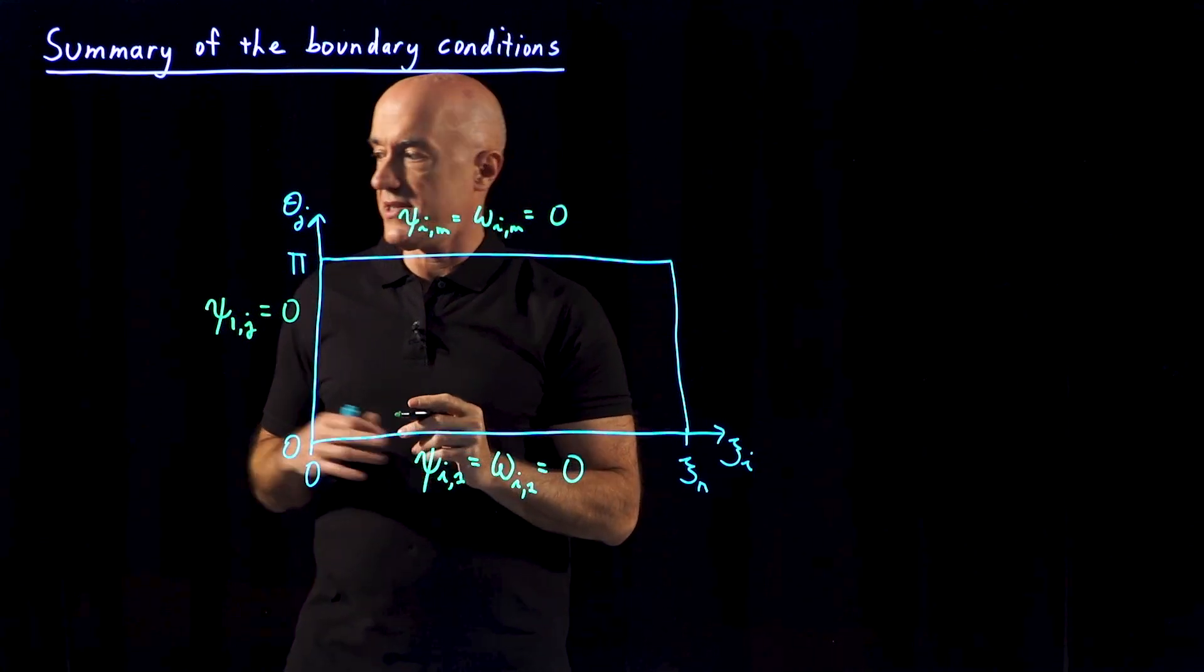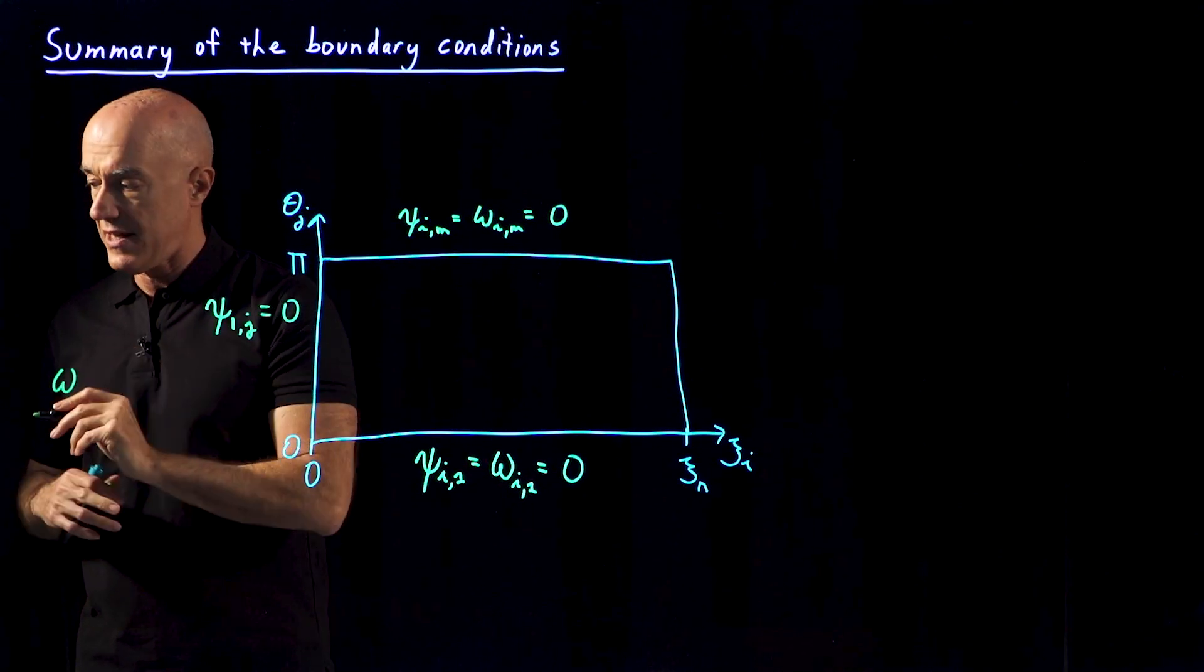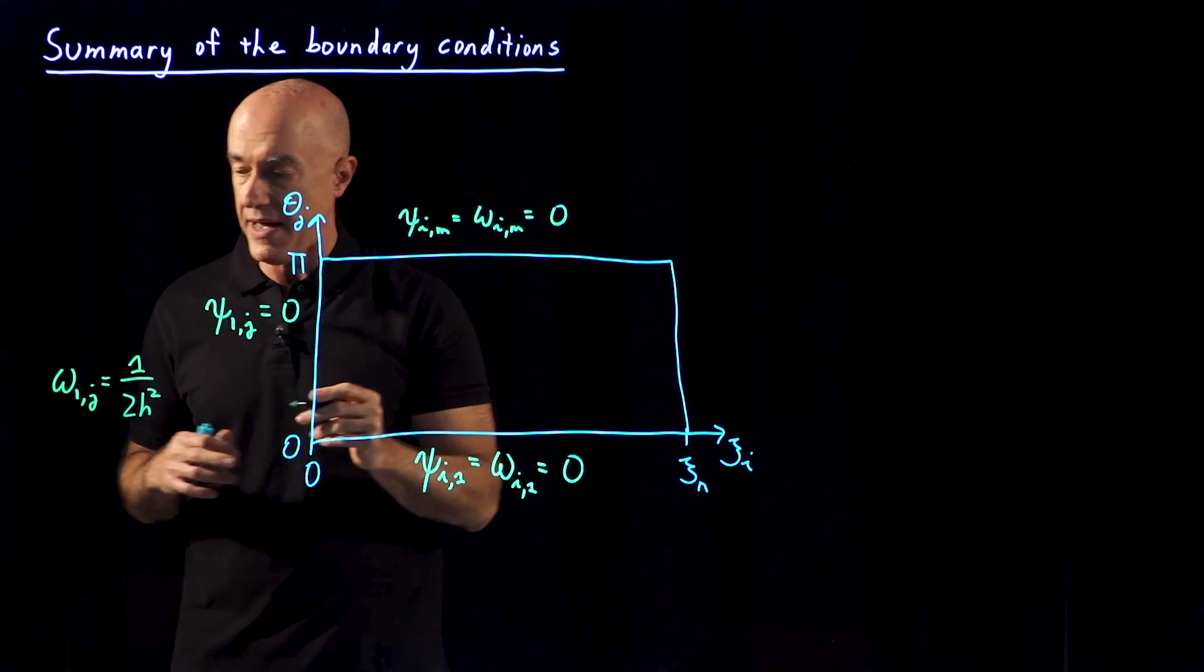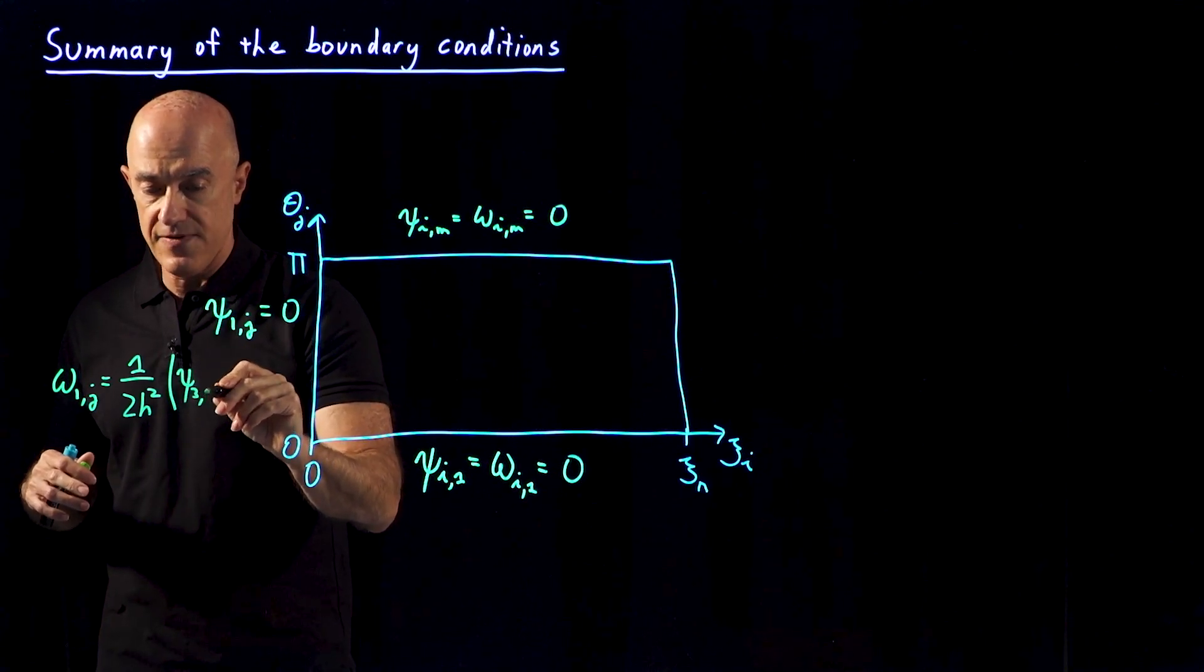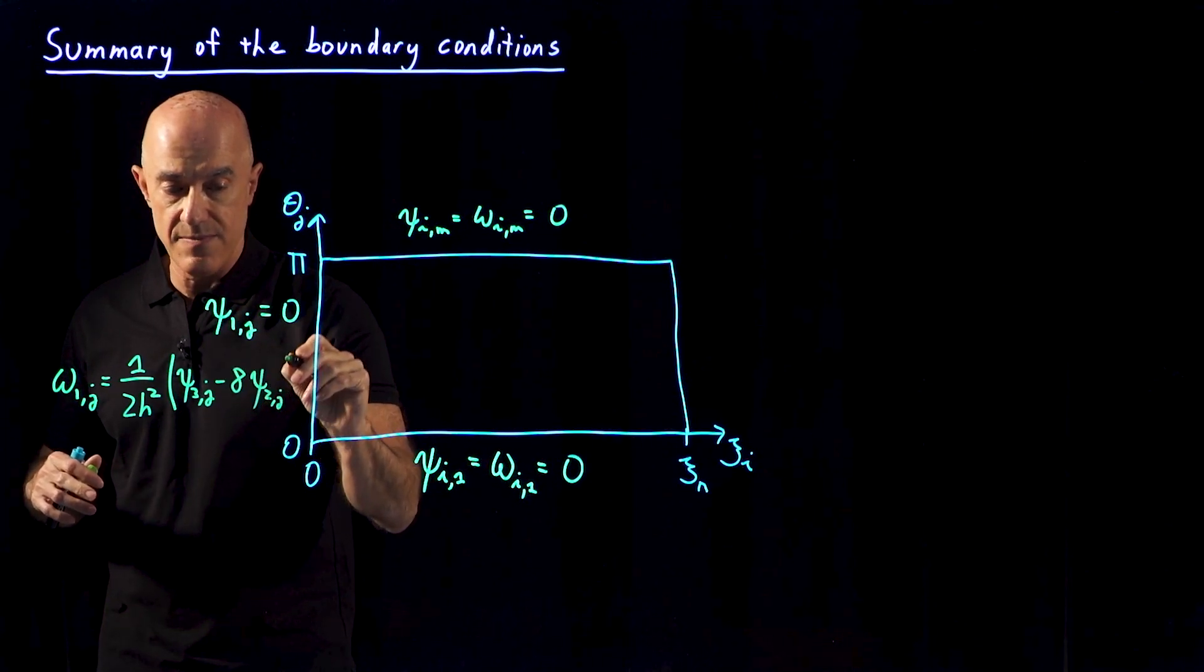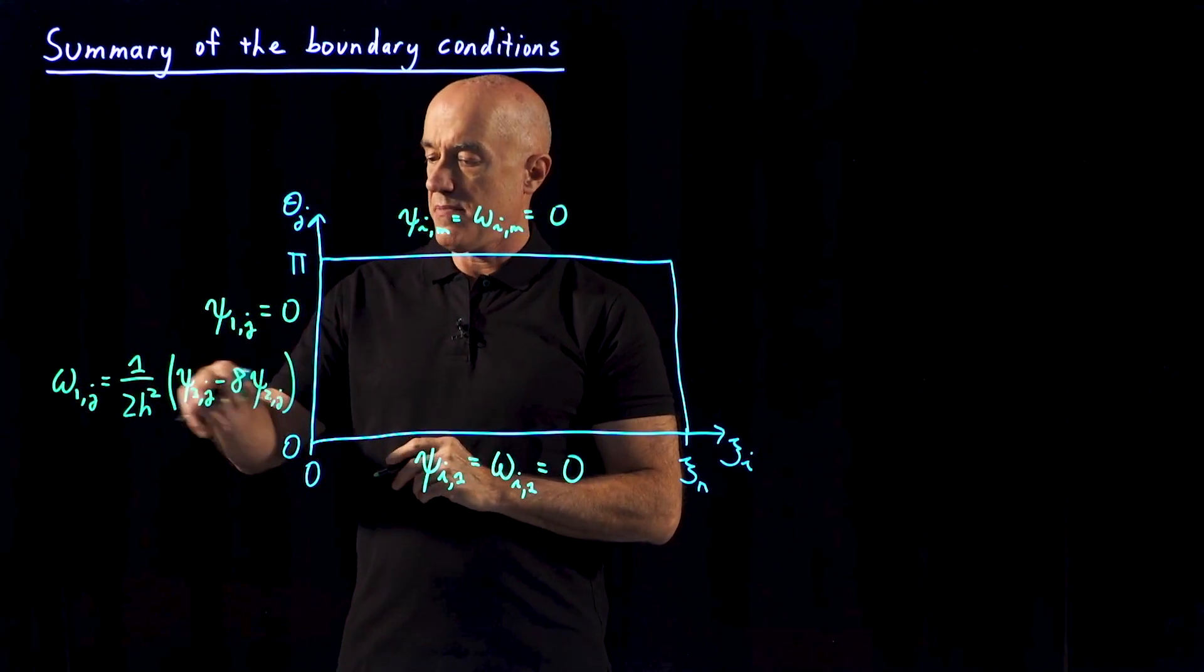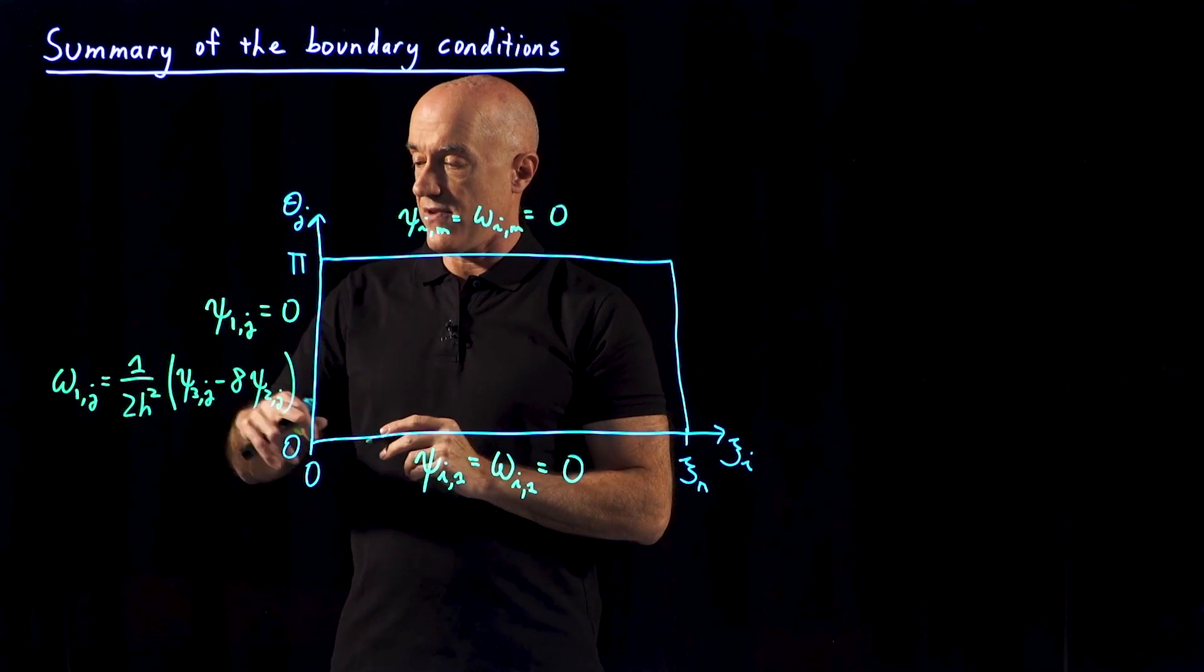What about the vorticity on the cylinder? That was this complicated boundary condition which we derived. We have the vorticity on the cylinder, omega 1,j equals 1 over 2 times h squared, where h is the grid spacing, times the stream function 2 points away from the cylinder minus 8 times the stream function 1 point away from the cylinder. This is the most sophisticated boundary condition which generates vorticity on the cylinder by computing the difference between these stream functions 1 and 2 grid points away from the cylinder.